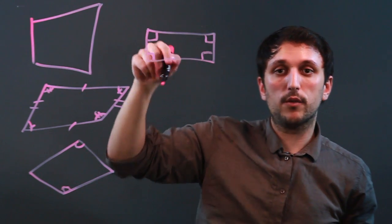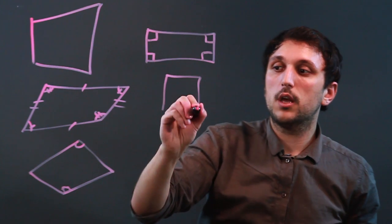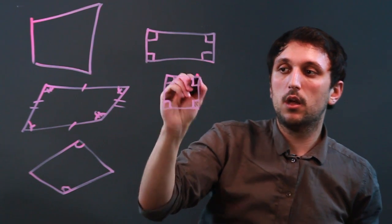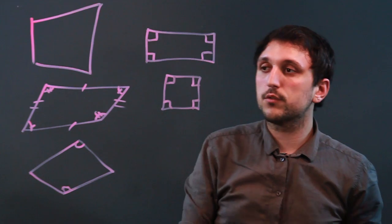A subcategory of rectangles would be squares, in which all four sides are equal and all four angles are equal. So squares are rectangles.